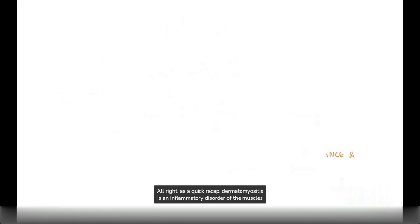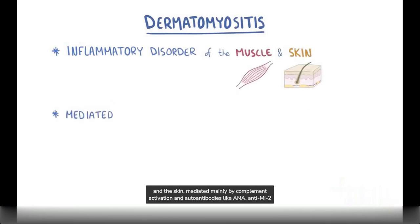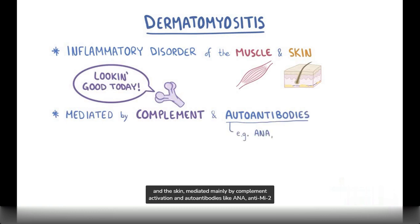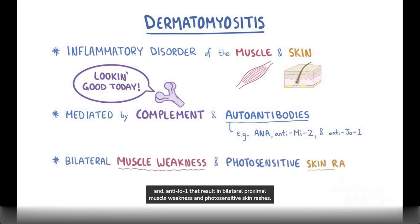Alright as a quick recap, dermatomyositis is an inflammatory disorder of the muscles and the skin, mediated mainly by complement activation and autoantibodies like ANA, anti-MI2, and anti-JO1 that will result in bilateral proximal muscle weakness and photosensitive skin rashes.